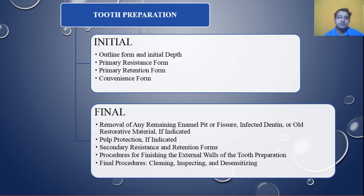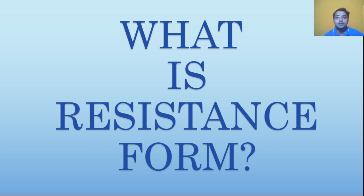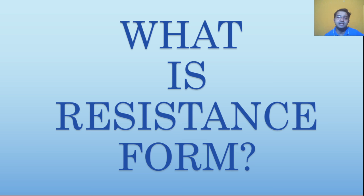As we learned last time, tooth preparation has been divided into initial and final preparation, and we covered outline form and initial depth last time. Today we will be learning what is the resistance form, which is the second step of the cavity preparation. Please remember that this is the primary resistance form, because you also have secondary resistance and retention form.